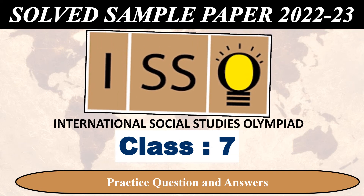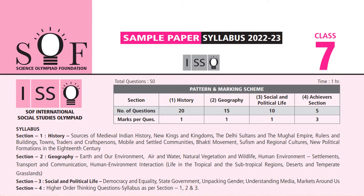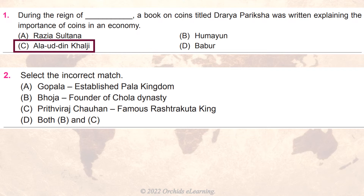International Social Studies Class 7 latest sample paper. During the reign of Alauddin Khalji, a book on coins titled Draya Pariksha was written, explaining the importance of coins in an economy. Select the incorrect match.